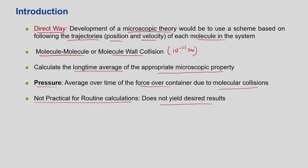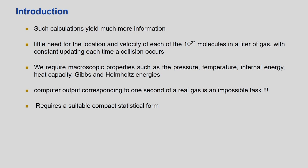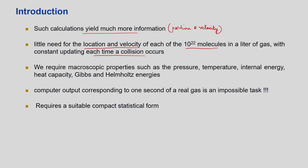To summarize: such calculations yield position and velocity — but they are not of much use. There is little need for the exact location and velocity of every molecule in a liter of gas. Moreover, if you know the location and velocity of each molecule, you have to update its next position and velocity every time a collision occurs — which is impossible.